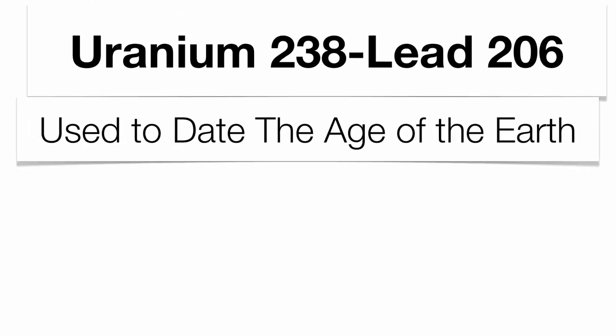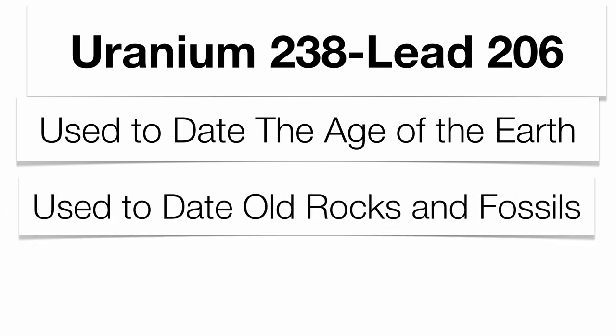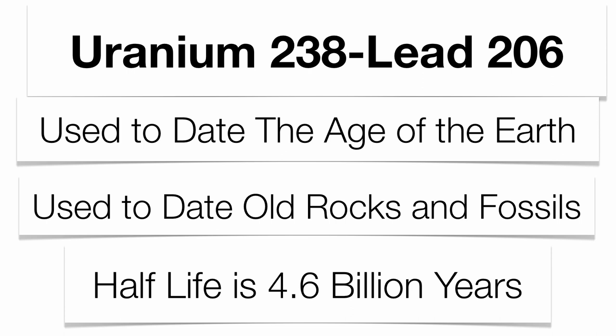You also have uranium-238. That's going to change into lead-206. That's going to be used to date the age of the Earth because, relatively speaking, the half-life of uranium-238 is about 4.5 billion years, which is identical that we believe is the age of the Earth. So your uranium-238 would be very good in dating the age of the planet.